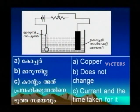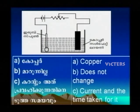The metal with which electroplating is to be done should be used as the positive electrode, and an aqueous salt solution of that metal should be used as the electrolyte. So copper sulfate is to be used as the electrolyte, and copper is to be used as the positive electrode.